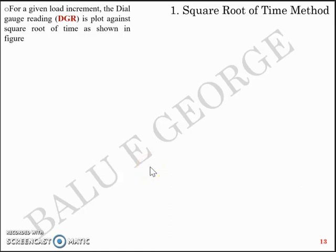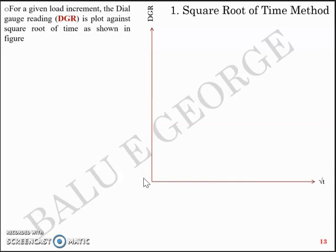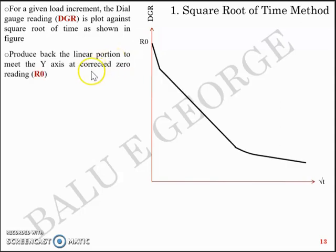For a given load increment, the dial gauge reading (DGR) is plotted against the square root of time as shown in this figure. The data from the laboratory is time and dial gauge reading, from which we measure the settlement. In this graph, the square root of time is marked on the x-axis and the dial gauge reading is marked on the y-axis.